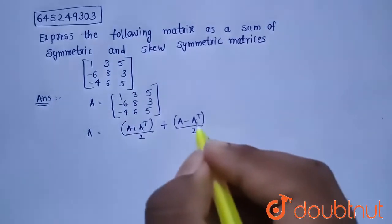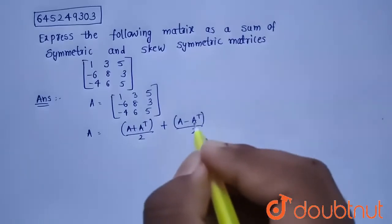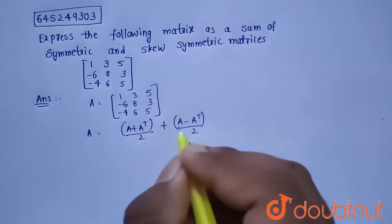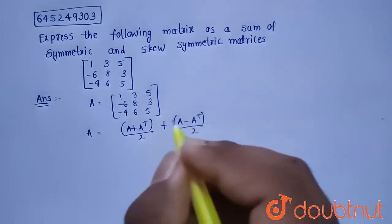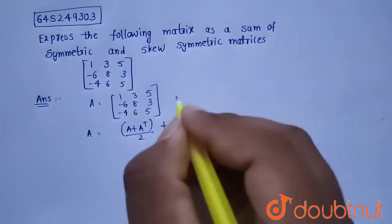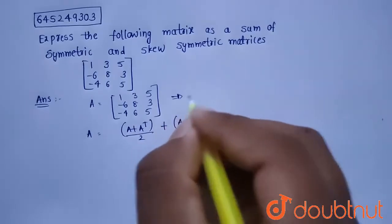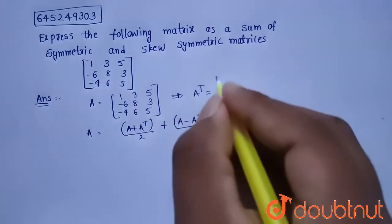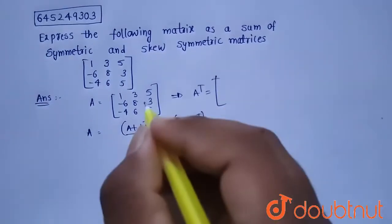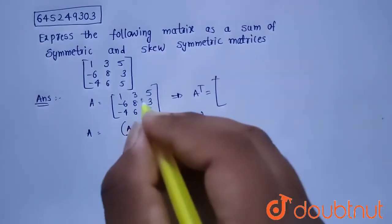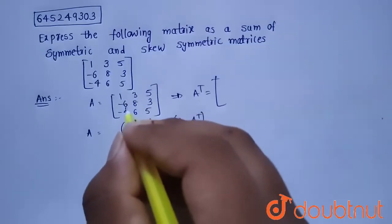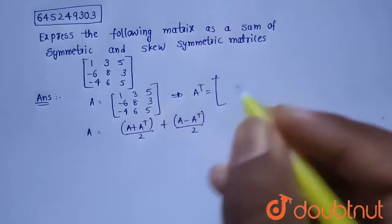Now, (A + A^T)/2 is the symmetric matrix and (A - A^T)/2 is the skew-symmetric matrix. In order to find these matrices, we need to find A transpose. We convert the row elements to column elements and column elements to row elements.